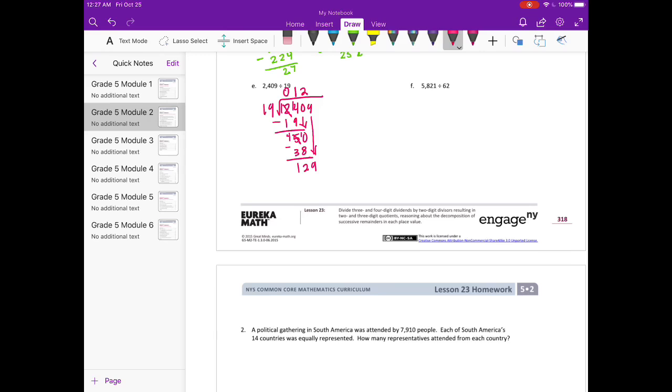We get 12 and bring down the 9. How many times can 19 go into 129? Let's see, 19, I'll round it to 20. 20 can go into 100 five times. So 129 would be 6 times. So let's try 19 times 6. 6 times 9 is 54. 11, 114. So it could go in 6 times. If I added another 19, that would be too big. We subtract, get 15.